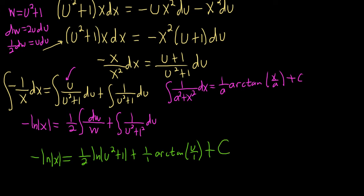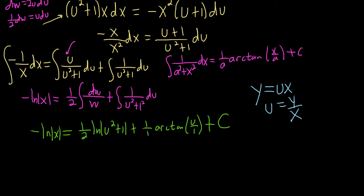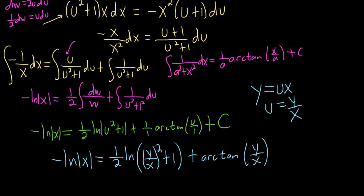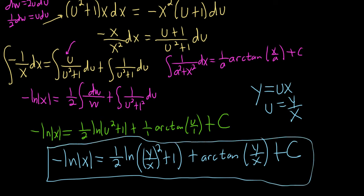We are so close. Just recall that y was equal to ux. So that would mean that u is equal to y/x. So the very last thing to do is replace all of the u's with y/x. So the final answer will be negative ln|x| equals ½ natural log - we don't need the absolute value, all of this is positive because it's being squared, so I'll just put a parenthesis - (y/x)²+1 plus arctan of u, but u is y/x. And then we have our plus c at the end. So that would be the final answer. I hope this video has been helpful.